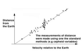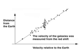The distances were measured using another standard method, largely that of using Cepheid variables. The velocities of the galaxies were measured by using the degree of redshift of their spectra.